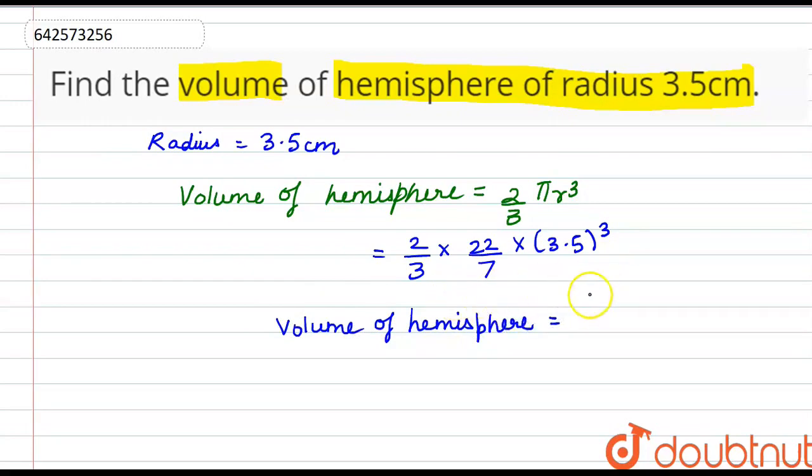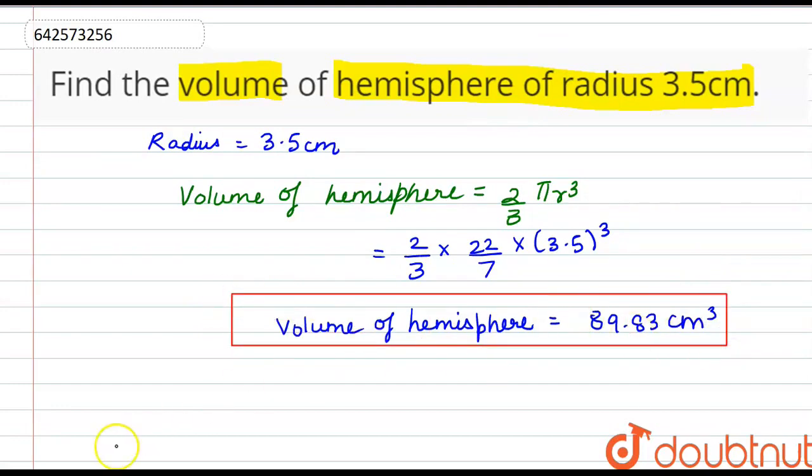Solving this calculation, the volume comes out to be 89.83 cm³. So this is the required volume of the hemisphere of radius 3.5 cm. Thank you.